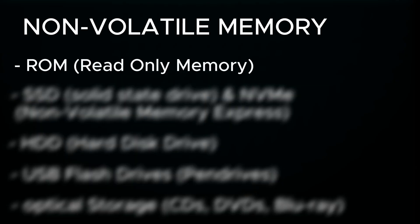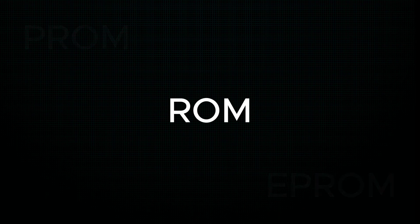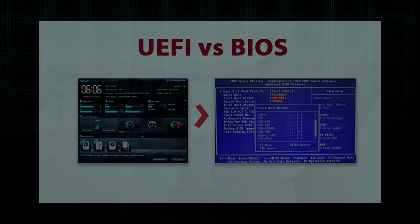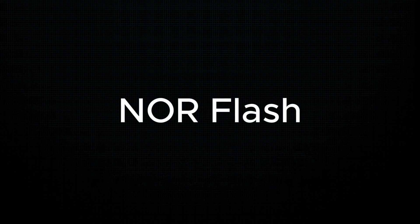Now we can move to the slower but also very important non-volatile memory, where you can safely store your data without a constant power supply. Let's start with ROM — read-only memory. They are typically used to store firmware; it's what your computer looks for right after starting — BIOS or UEFI. True ROM, PROM, and EPROM are outdated. Nowadays, modern firmware is stored on EEPROM — Electrically Erasable Programmable ROM — or specifically a type called NOR Flash.